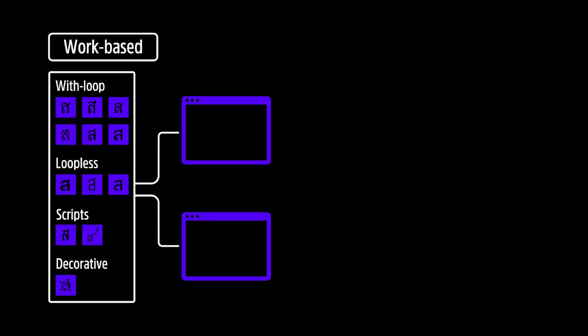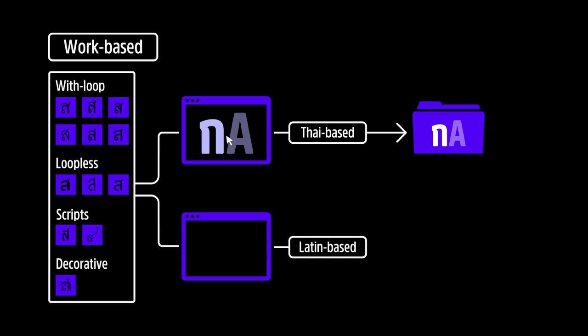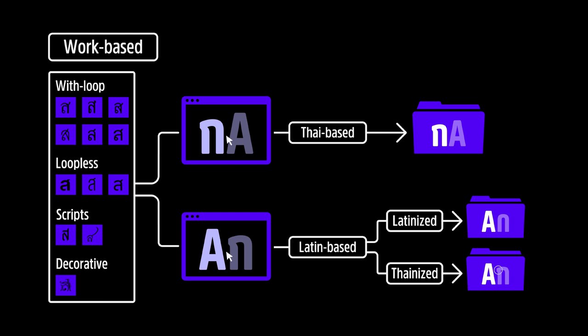The third perspective of classification is a unique and additional perspective — Work Bits. We classify them based on the origin of the fonts, which are Thai-based and Latin-based. First, Thai-based: the initial design is Thai, and Latin is later paired to the Thai font. Latin-based: in this group, the initial design is Latin, and Thai is later paired to the Latin ones.